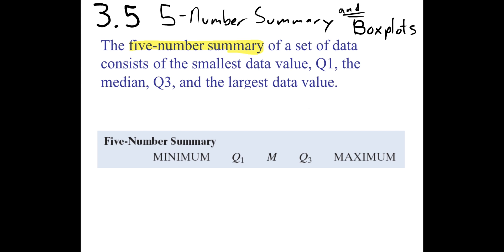So what is the five-number summary? It is, shockingly, five numbers, and it's usually given in this order: the minimum data value, Q1, the median data value, Q3, and then the maximum data value. We're going to be summarizing a numeric variable with these five numbers.